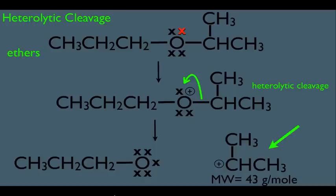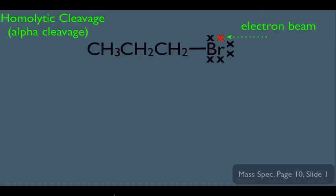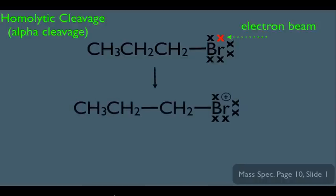Now let's look at homolytic cleavage, also called alpha cleavage. Alpha cleavage is important because it will help with our quick product method later. To learn homolytic cleavage, we start the same way — the molecule goes in the mass spec, the electron beam dislodges an electron, giving the radical cation. The carbon directly attached to the halogen is called the alpha carbon. Heterolytic cleavage is one possibility, but alpha cleavage is simply another way the cookie can crumble.